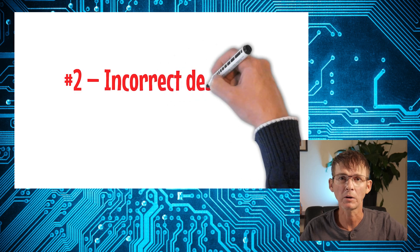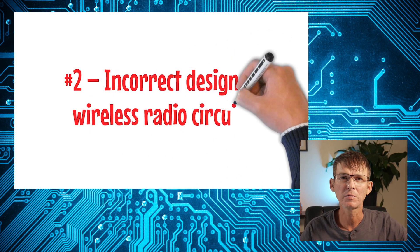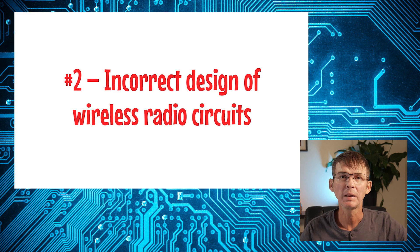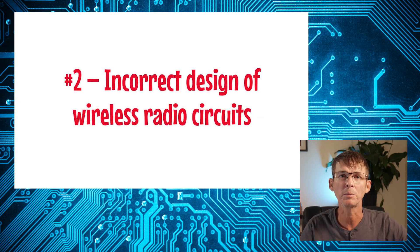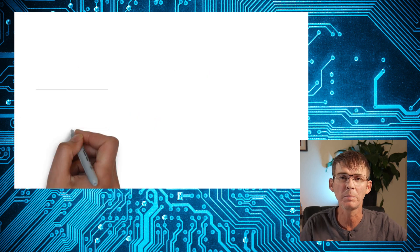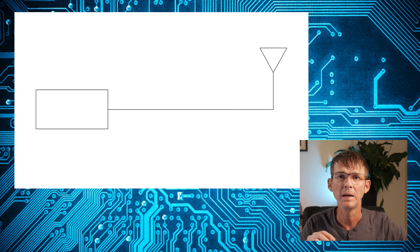The next design mistake I want to discuss is the incorrect design of wireless circuits. If your product has any wireless functionality, then the PCB layout for any RF portions is going to be super critical. Unfortunately, it's done wrong more often than it is done right. For maximum power transfer between a transceiver — such as Bluetooth or Wi-Fi — and the antenna, their impedance must be matched.